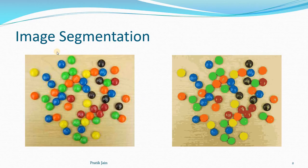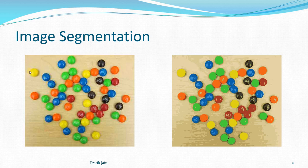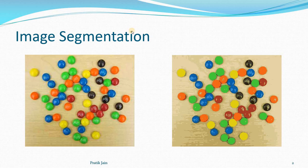Let's see what image segmentation is. Given an input image, I want to segment this image - that is, I want to make different segments of different colors. Suppose I want to extract the yellow color - I want to know which pixels are yellow. There are different shades of yellow due to the different light that it is reflecting. I want to extract only this particular circle out, and that can be done by image segmentation.